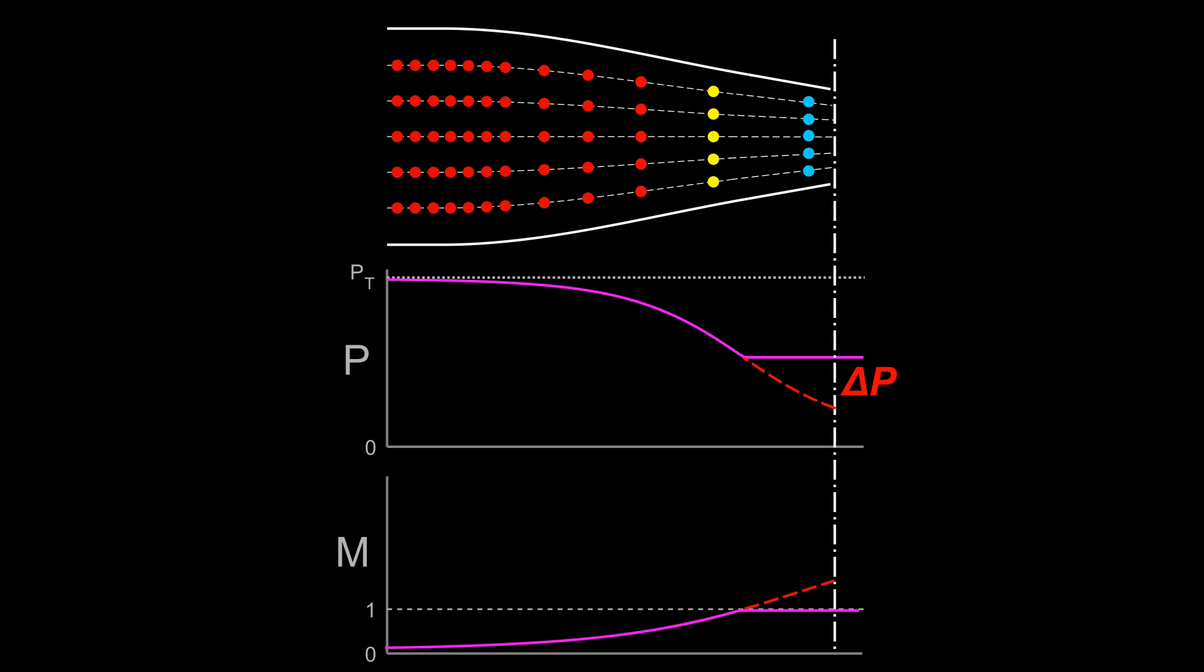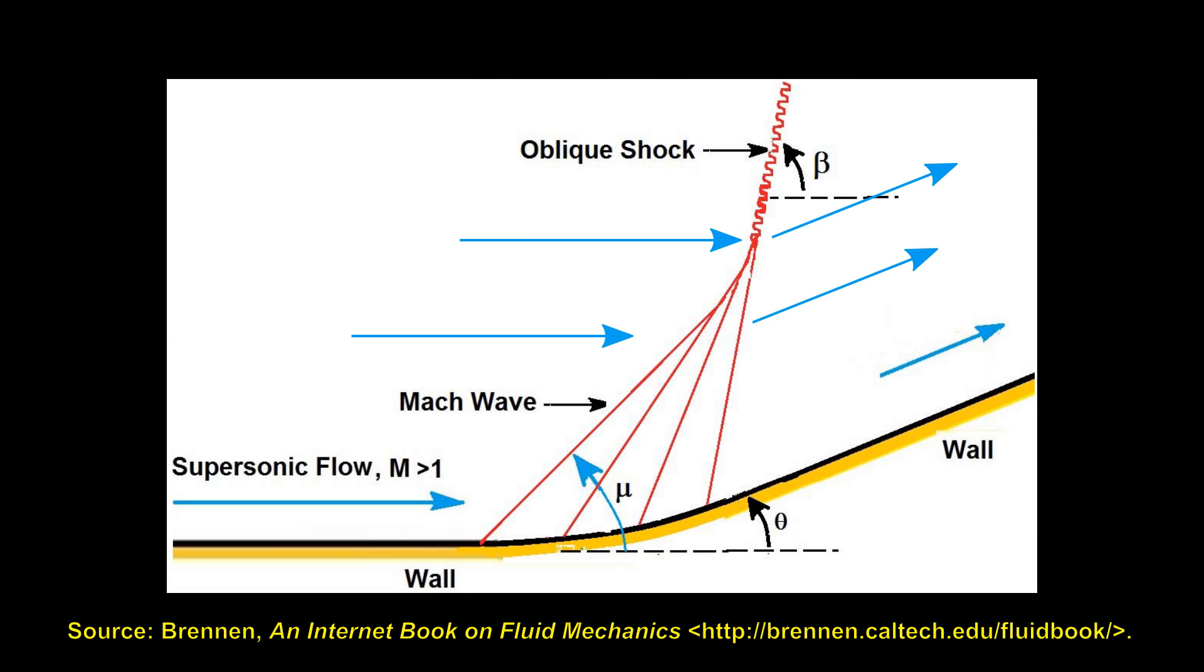Whenever supersonic flow streamlines are turned into themselves, a shock will occur, and these shocks are known as oblique shocks.